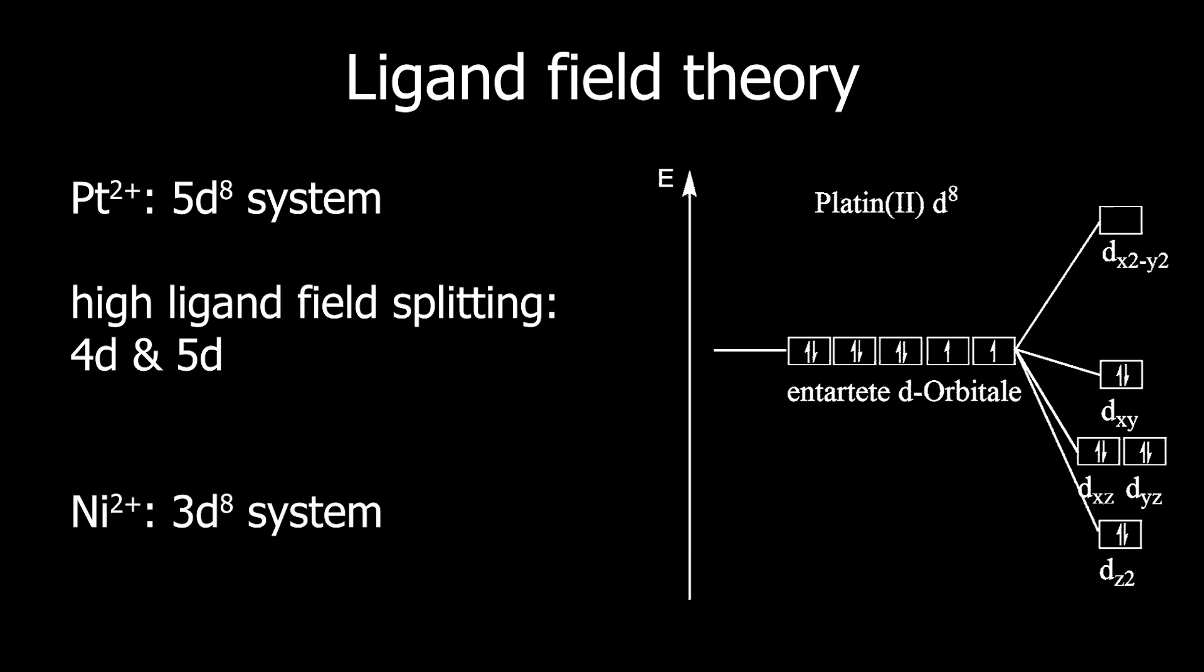Nickel, as the lighter relative, wouldn't form a square-planar complex in this case, but rather a tetrahedral one. However, the square-planar geometry is essential for cisplatin's effectiveness as a medication.